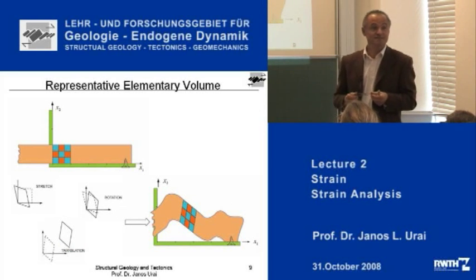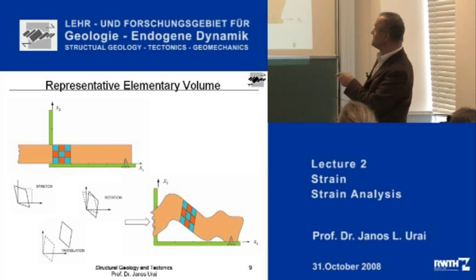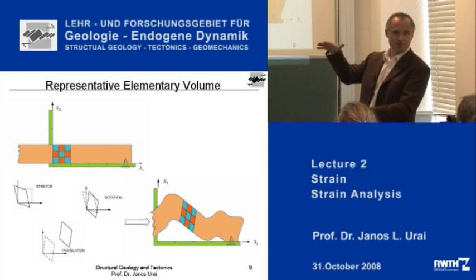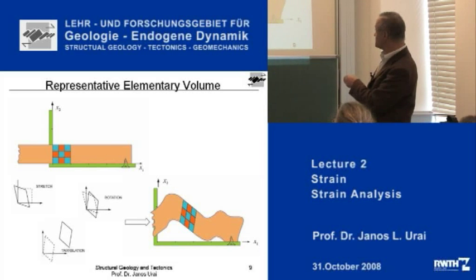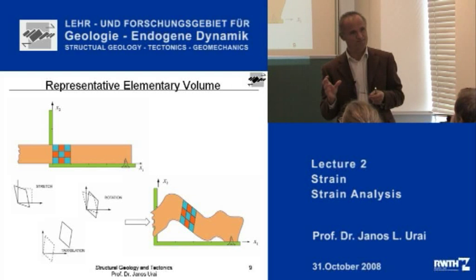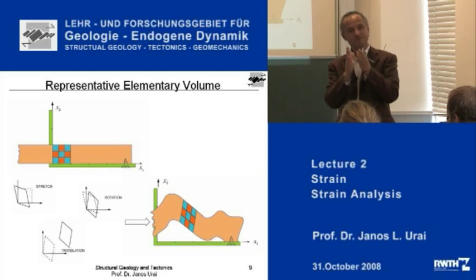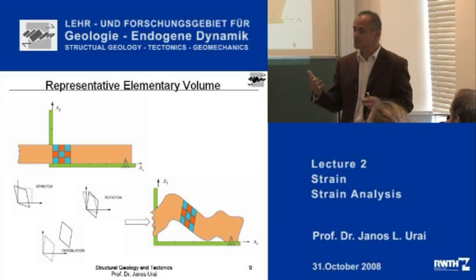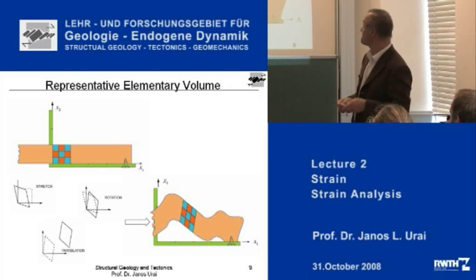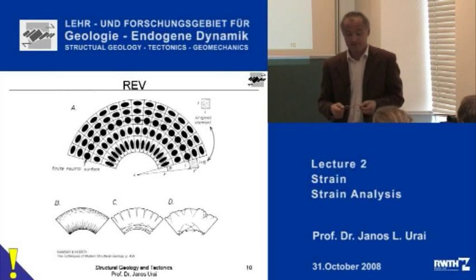Coming back to the representative elementary volume: here is a nice example. I take my beam of rock — this could be a very thick, 100-meter-thick layer that I am squeezing in the alpine orogeny. This is how it looks afterwards. I can define a small area which deforms homogeneously. If I want to describe the deformation of a very complexly folded rock, I would divide it into small elements deformed homogeneously, so that for each element I can give a simple mathematical description. Representative elementary volume. A simple example is a fold.